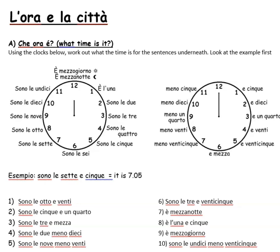Using the clocks that you can see on the screen, you had the hours on the left hand clock and the minutes on the right hand one. Number one: sono le 8 e 20 — 8:20. Number two: sono le 5 e un quarto — 5:15.